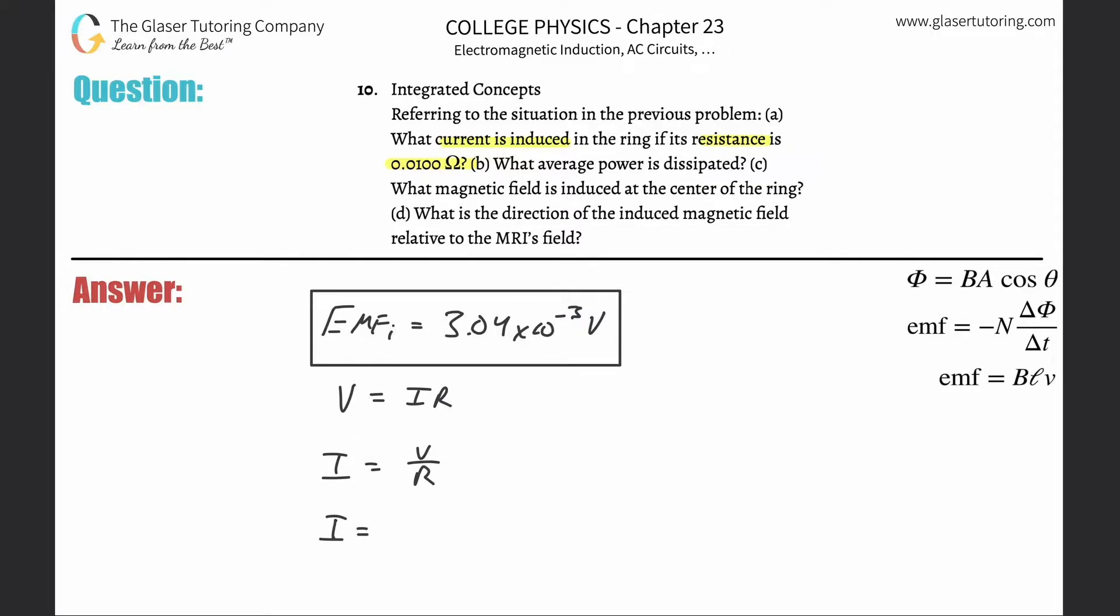So what I can do is plug in that voltage at the top, 3.04 times 10 to the minus 3, and then simply plug in the resistance at the bottom, 0.01.